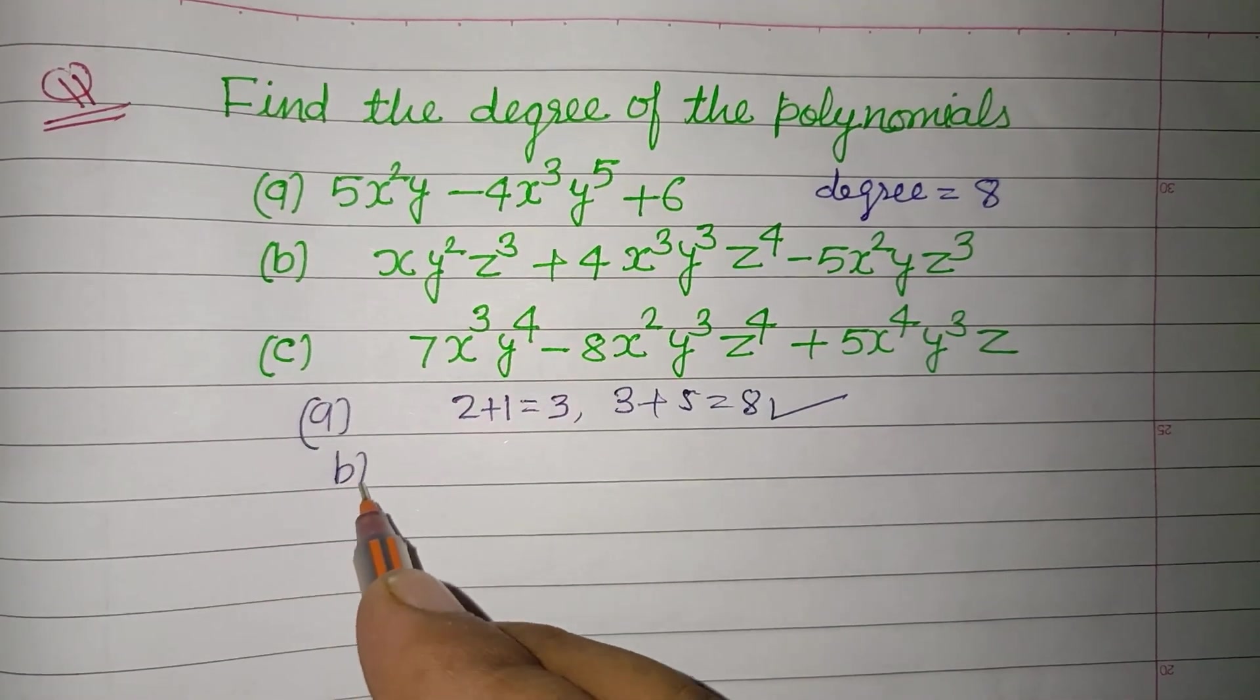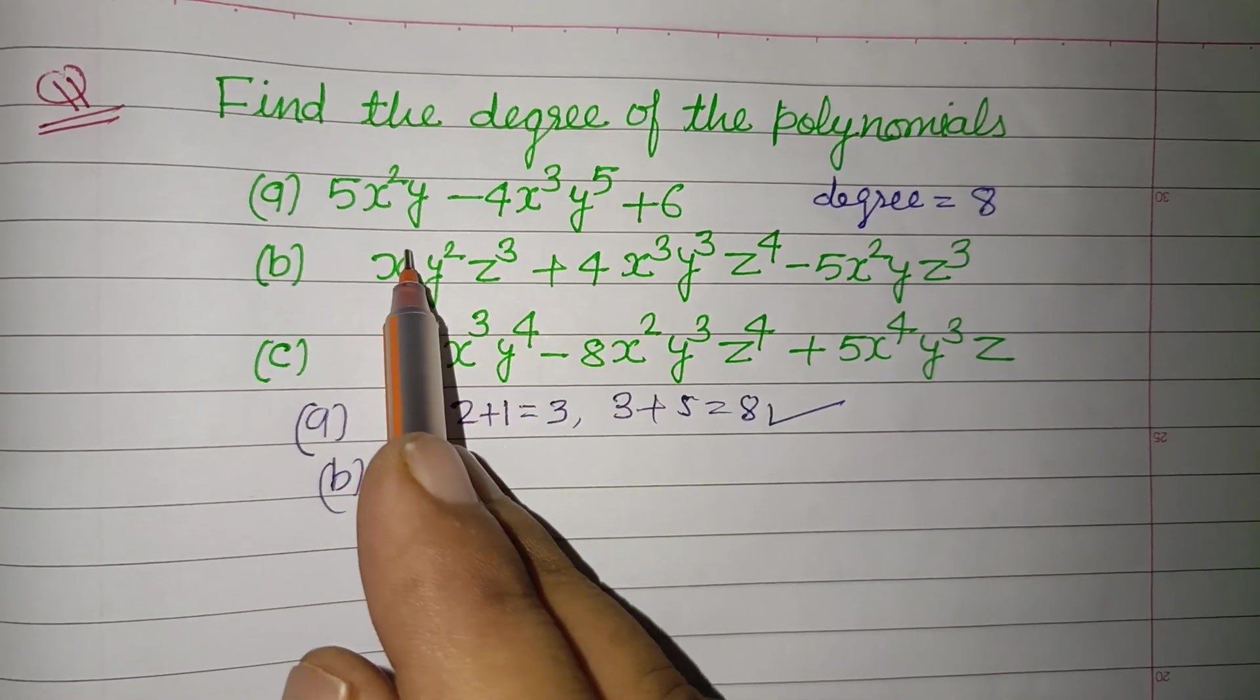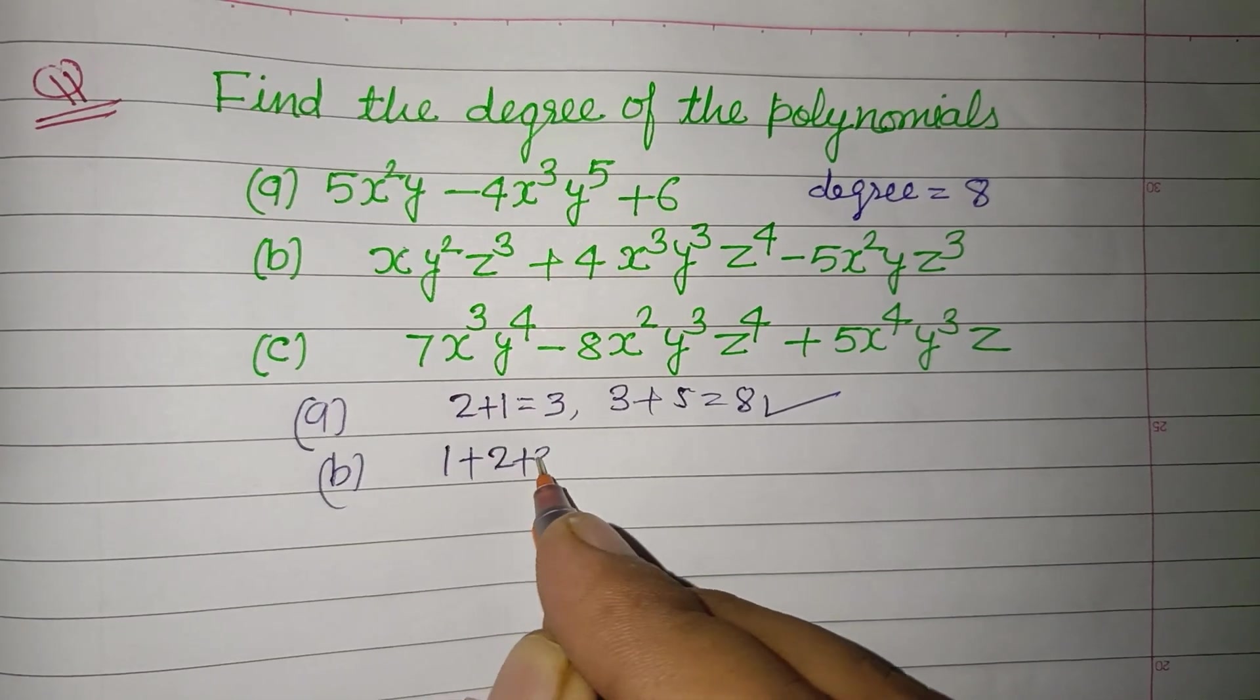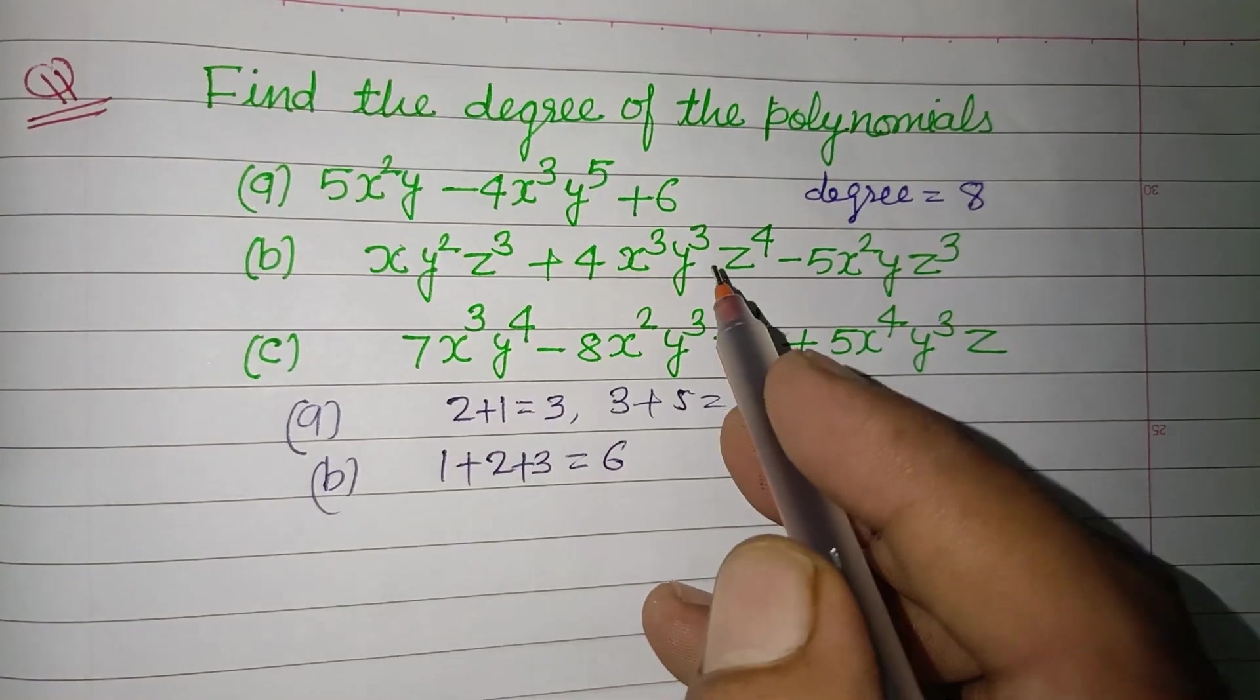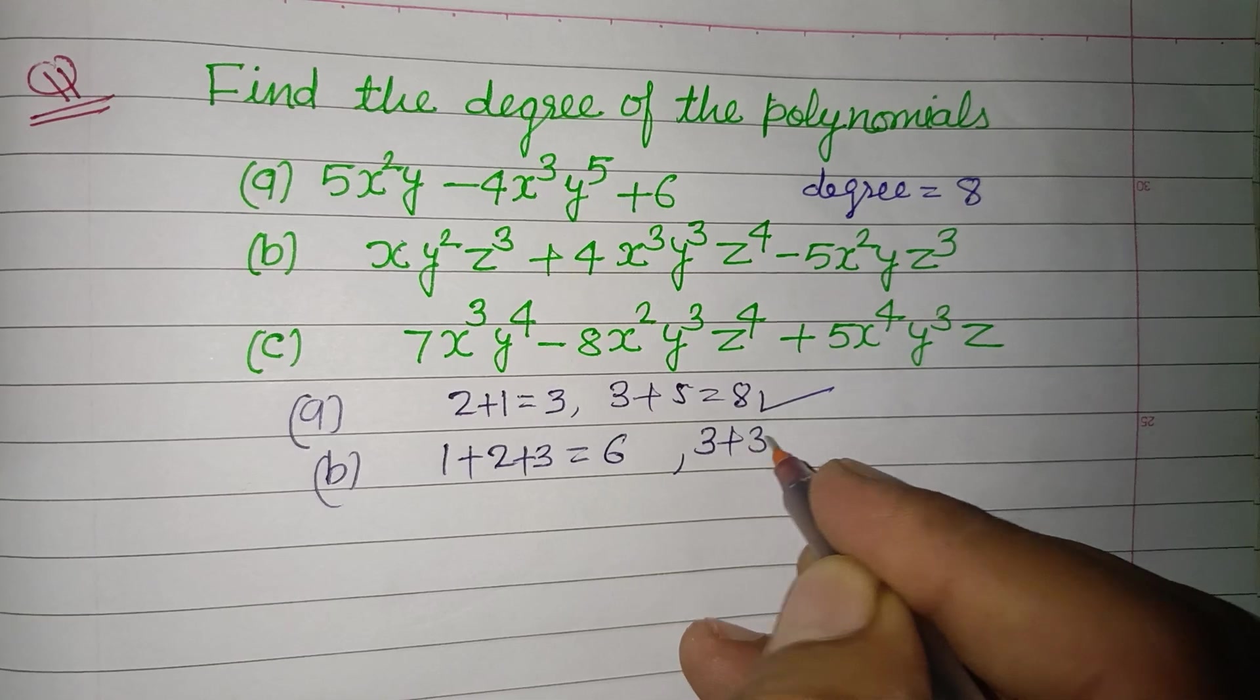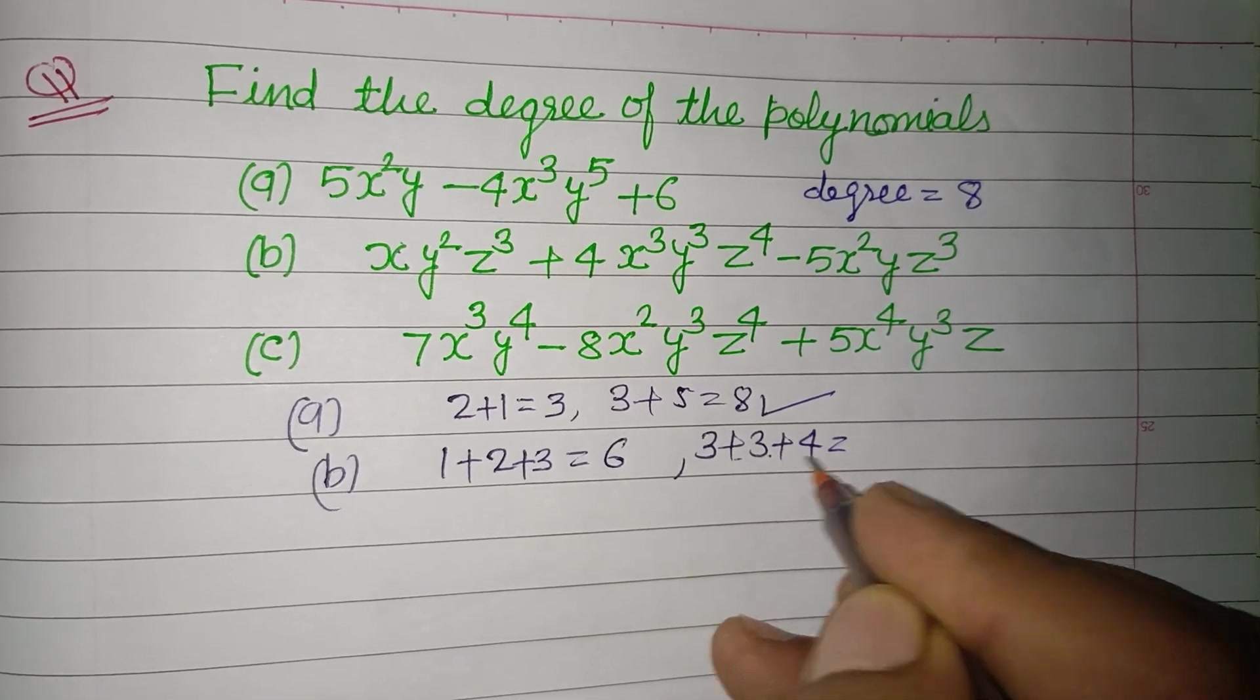Now in second, the first term powers are 1, here x to the power 1, 2 plus 3. So this is 6. Second term powers are 3, 3, 4, so 10.